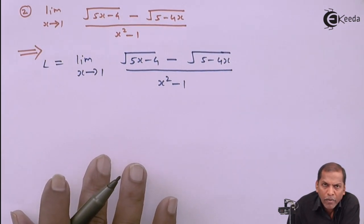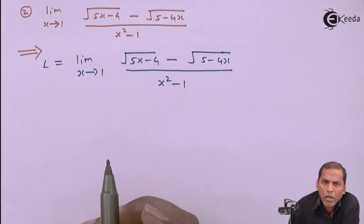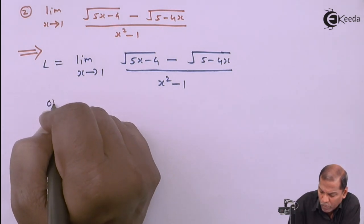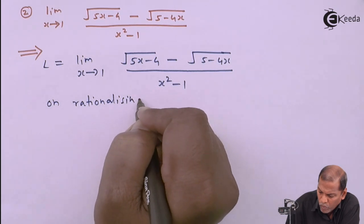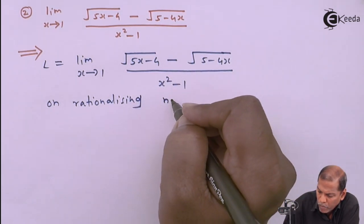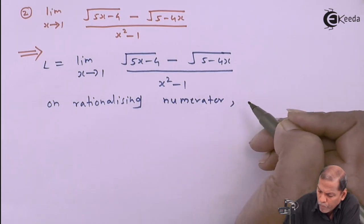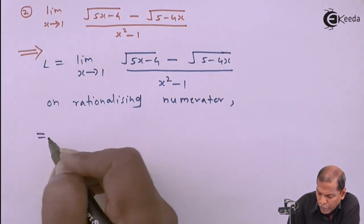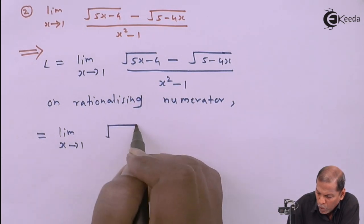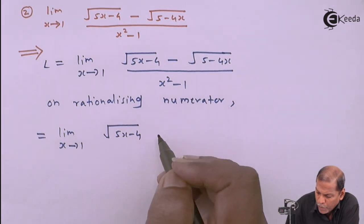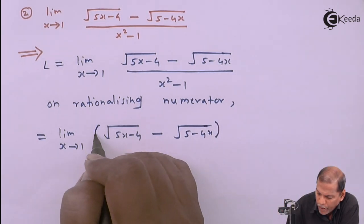Here the radical part, that is the square root, is present in the numerator. It means we have to rationalize the numerator. So on rationalizing the numerator, the next step will be: limit x tends to 1, and we write root of (5x minus 4) and root of (5 minus 4x).